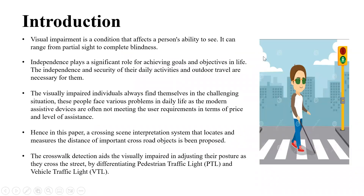Visual impairment is a condition that affects a person's ability to see. It can range from partial sight to complete blindness. Independence plays a significant role for achieving goals and objectives in life. The independence and security for their daily activities and outdoor travel are necessary for them. The visually impaired individuals always find themselves in a challenging situation, as modern assistive devices are often not meeting user requirements in terms of price and level of assistance.